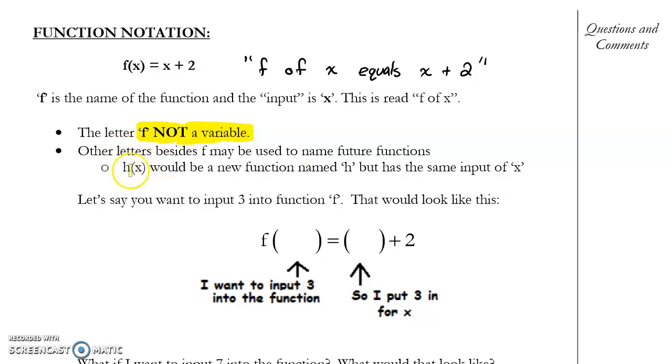So other letters like h could be in there, and this would be h of x, g would be g of x, k would be k of x, and so on.